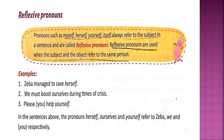Reflexive Pronouns are words ending in 'self' or 'selves' that are used when the subject and the object of a sentence are the same. Another way we can say, reflexive pronouns point back to the doer of an action, just as we see our reflection in a mirror.